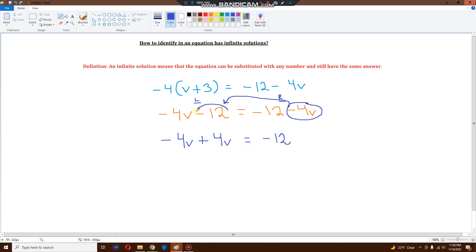But this minus 12 is on the left side. So let's jump across the equal sign. It becomes positive 12. And then minus 4v plus 4v is 0. And minus 12 plus 12 is 0. And there we go. We have an infinite solution. 0 equals 0. In other words, I can replace v with any number and it'll still come out to the same answer.